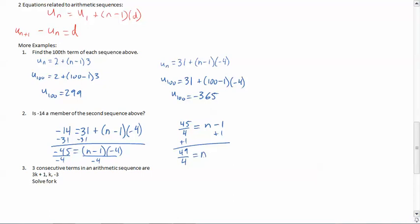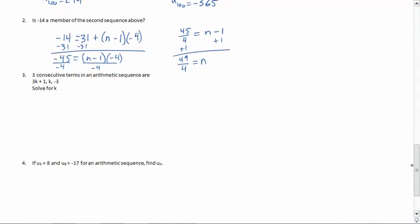And I note that when I add 1 to both sides, I'm going to get 49 over 4, because 1 is the same thing as 4 over 4, which is equal to n. Now, n, if you'll remember from our discussion the previous day, n is positive integers. And so I'm not getting a positive integer. I'm getting a fraction. And so therefore, no, negative 14 is not a member of this sequence. It's going to skip right over it.